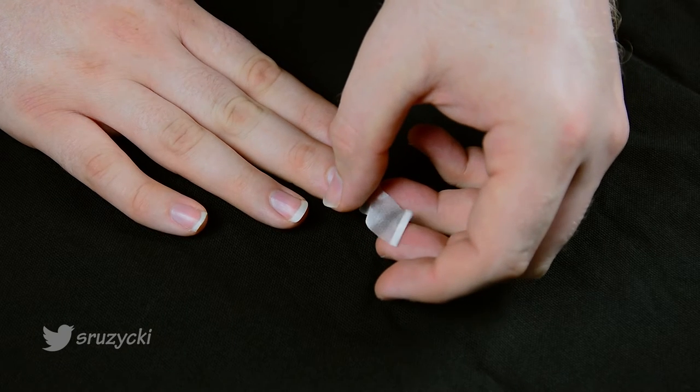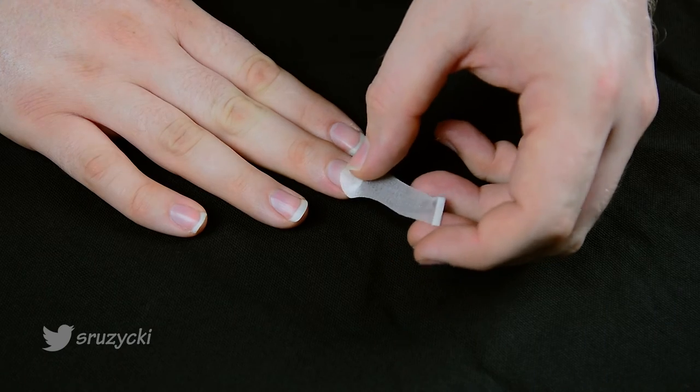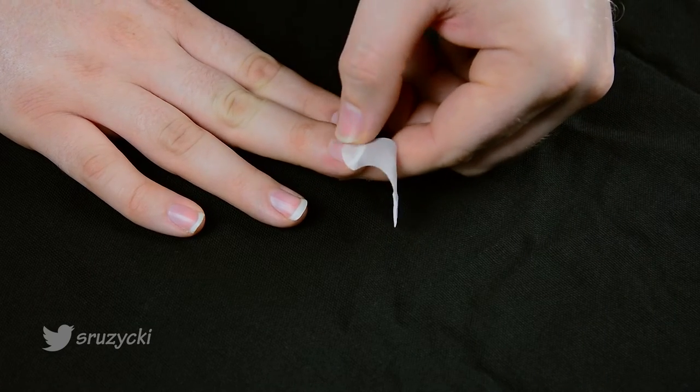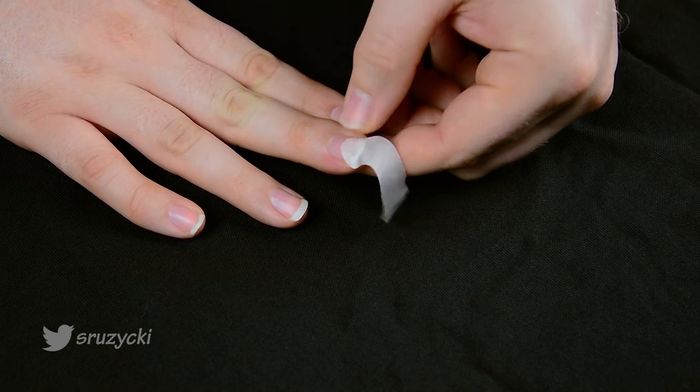Once the glue has dried, add the silk to the nail. If you don't have silk, you can actually use a tea bag or a tissue. I found that silk works the best.